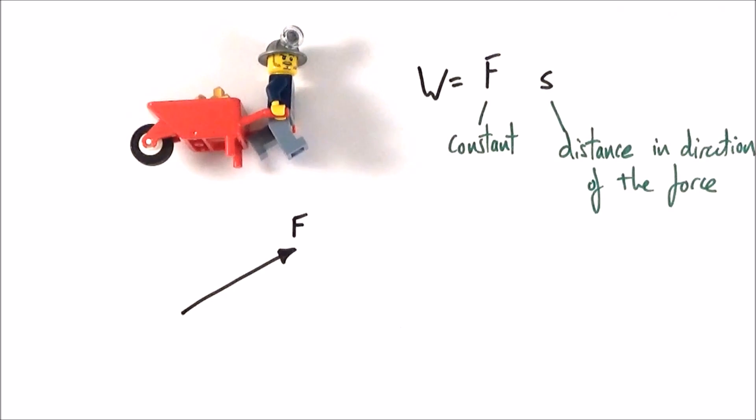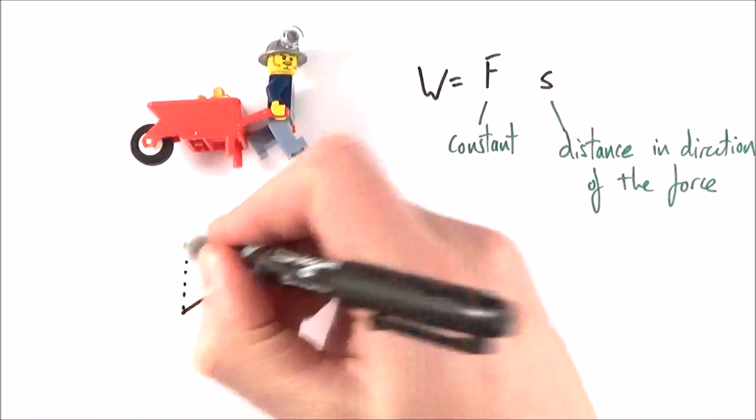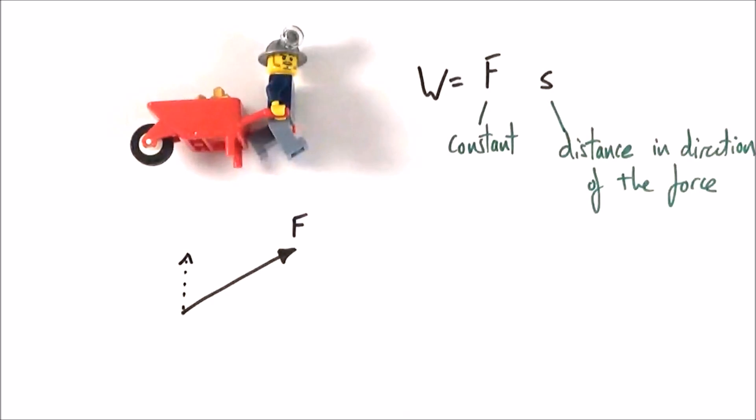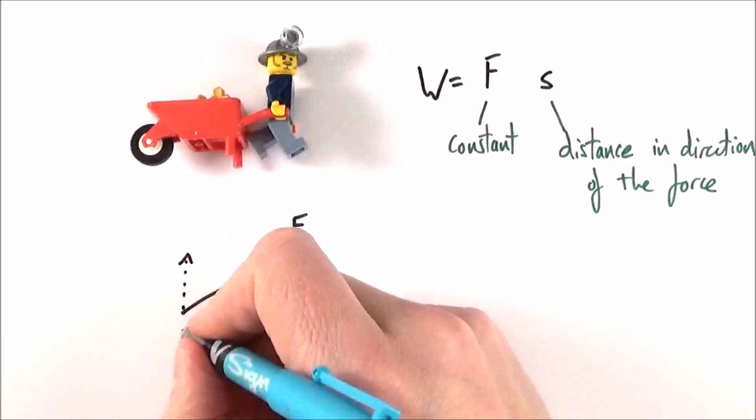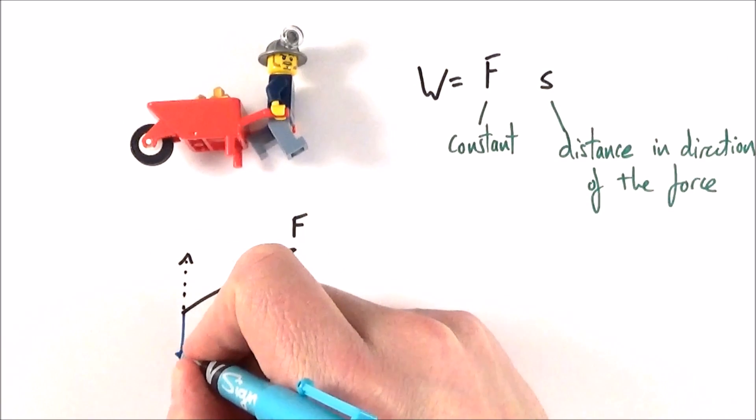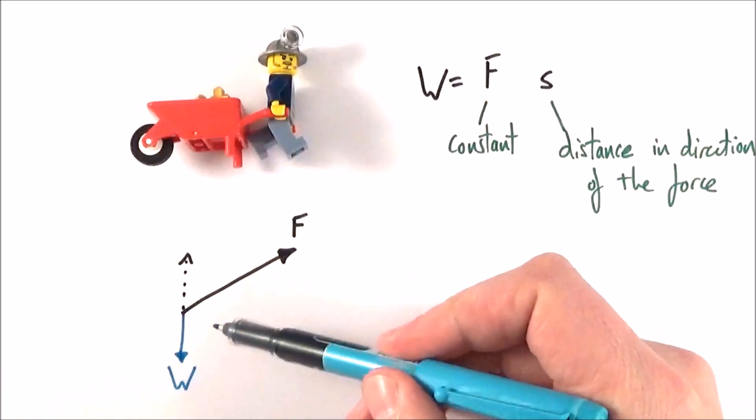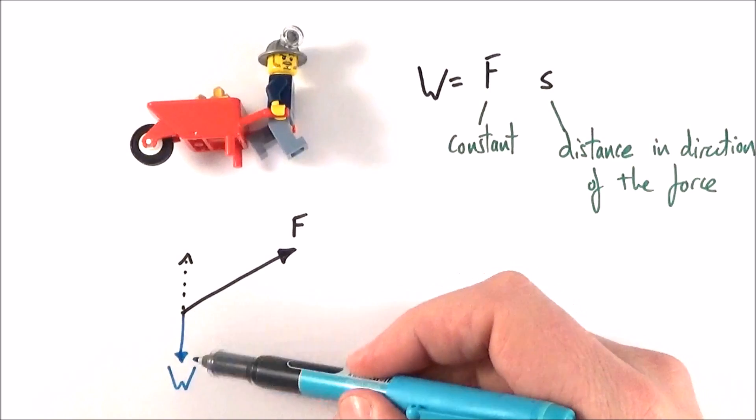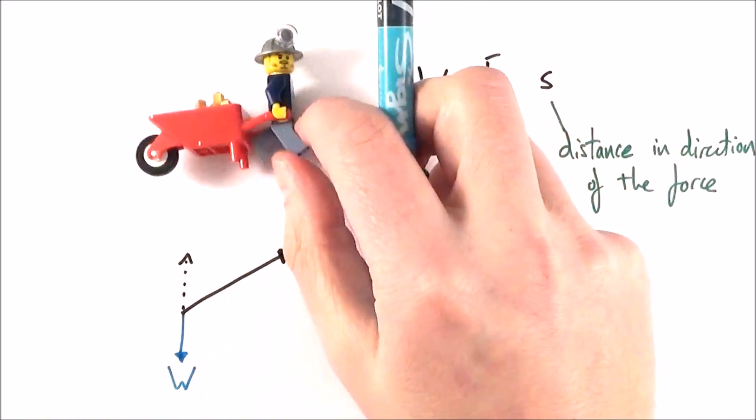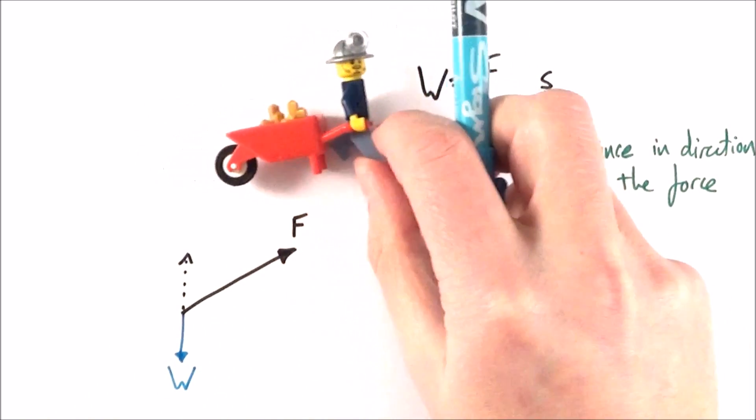Now there must be a vertical component of that force that counteracts the weight of that wheelbarrow, because the wheelbarrow isn't going up in the air and it's not going along. So here's the weight. So the vertical component of force is equal and opposite to the weight, so the wheelbarrow doesn't go up and down.